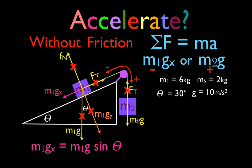Now let's look at one, actually two examples. In the first example, M1 is six kilograms, M2 is two kilograms. The angle of inclination of the incline plane is 30 degrees, and we're just going to round g to 10.